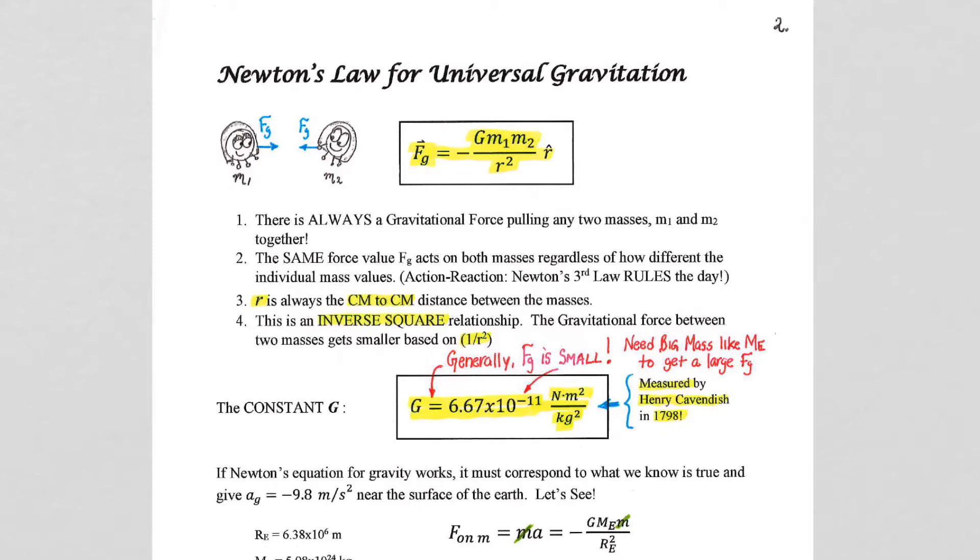We're going to jump now right to Newton's equation for universal gravitation. Namely, Newton's law for gravity, negative g mass 1 mass 2 divided by r squared, where let's break it down kind of piece by piece here a little bit.